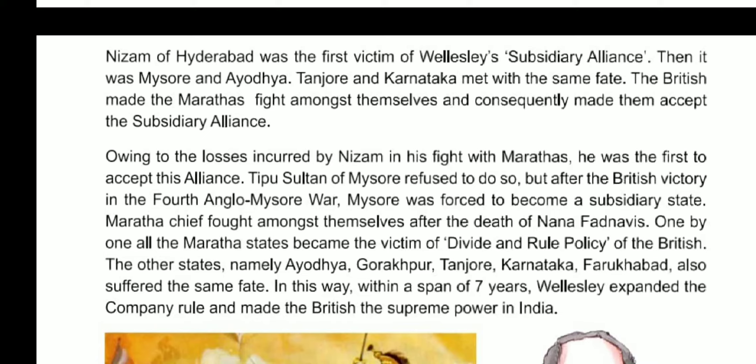Maratha chiefs fought amongst themselves after the death of their leader Nana Fadnavis, and one by one all Maratha states became victims of the British divide-and-rule policy. Other states — Ayodhya, Gorakhpur, Tanjore, Karnataka, and Farrukhabad — also suffered the same fate. Within a span of just seven years, Wellesley expanded company rule and made the British the supreme power in India.